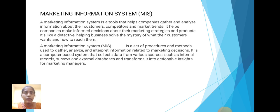Marketing Information System: A marketing information system is a tool that helps companies gather and analyze information about their customers, competitors and market trends. It helps companies make informed decisions about their marketing strategy and products. It is a set of procedures and methods used to gather, analyze and interpret information related to marketing decisions. It is a computer-based system that collects data from various sources such as internal records, surveys and external databases, and transforms it into actionable insights for marketing managers.